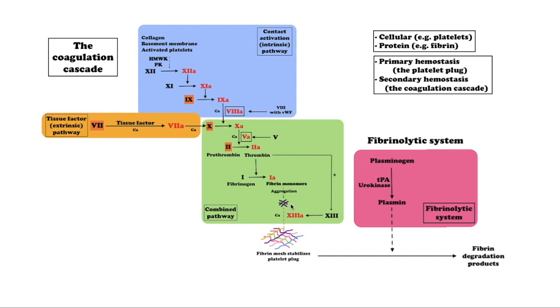Factor 13, or fibrin-stabilizing factor, is a zymogen that crosslinks fibrin. Factor 13 is activated by thrombin.